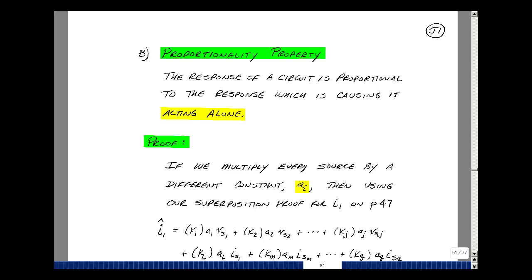There are two things that we need to have true before a circuit is linear. We looked at superposition, and now the second one is called proportionality. Definition for this is as follows: the response of a circuit is proportional to the response which is causing it acting alone.